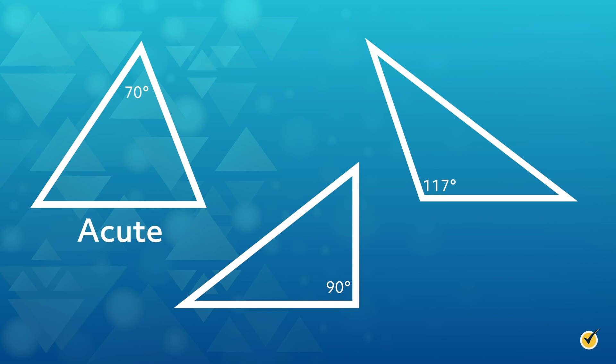We can see that in the middle triangle, the largest angle is exactly 90 degrees. You might remember that a 90 degree angle is a right angle, so this triangle is a right triangle.